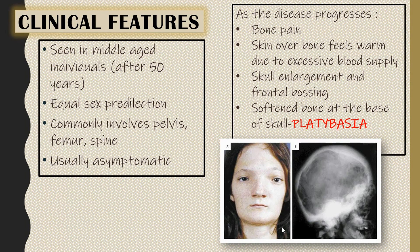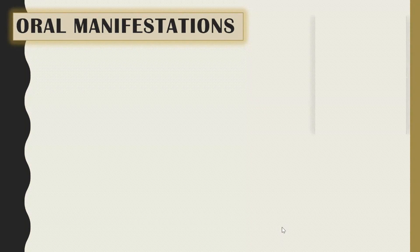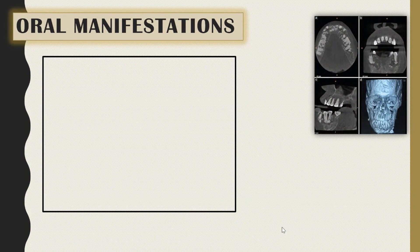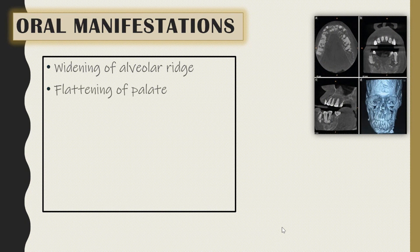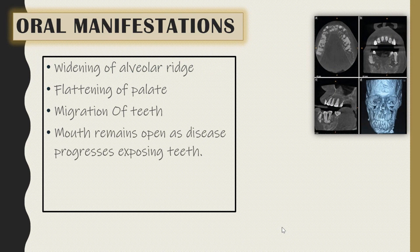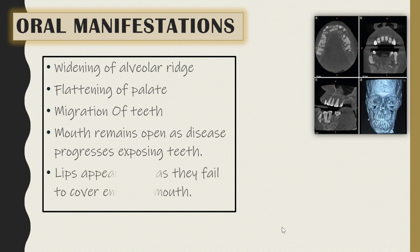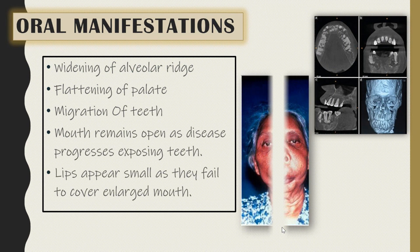The oral manifestations include widening of the alveolar ridge, flattening of the palate, and migration of teeth. The mouth remains open as the disease progresses, exposing the teeth. The lips appear small as they fail to cover the enlarged mouth.